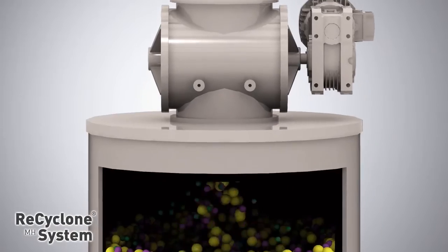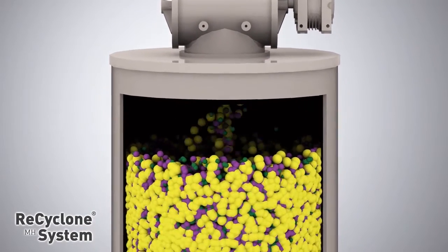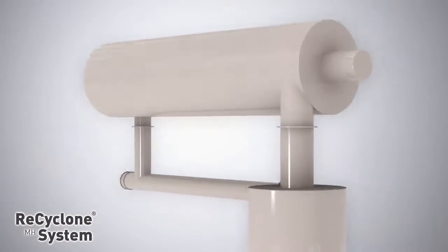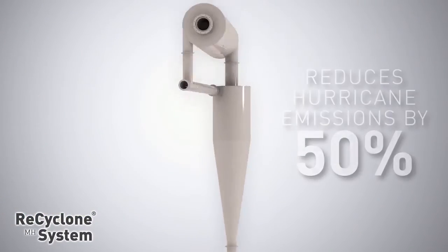The mechanical recyclone reduces emissions by more than 50% when compared with a hurricane system and is the most efficient mechanical separator on the market.